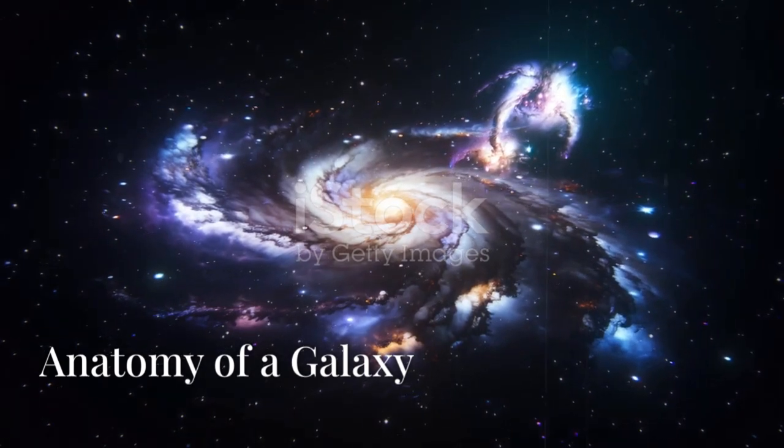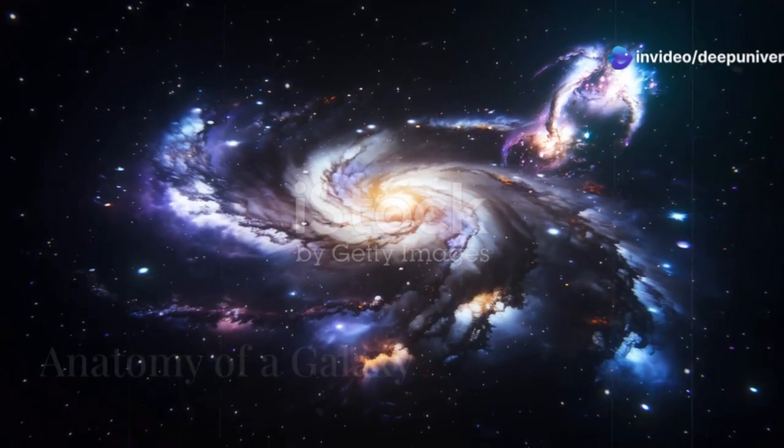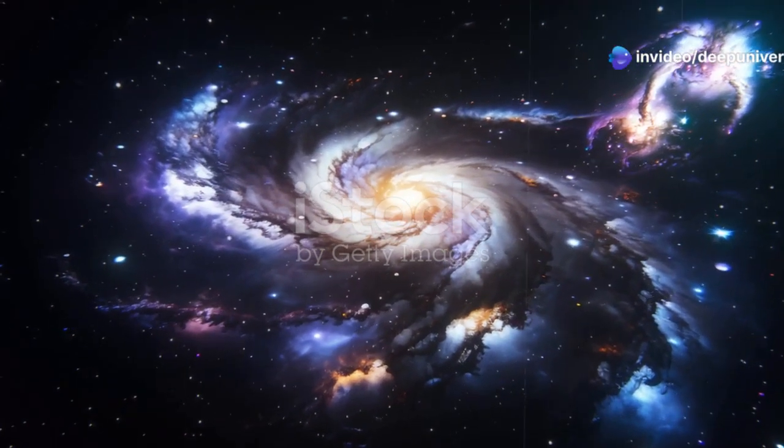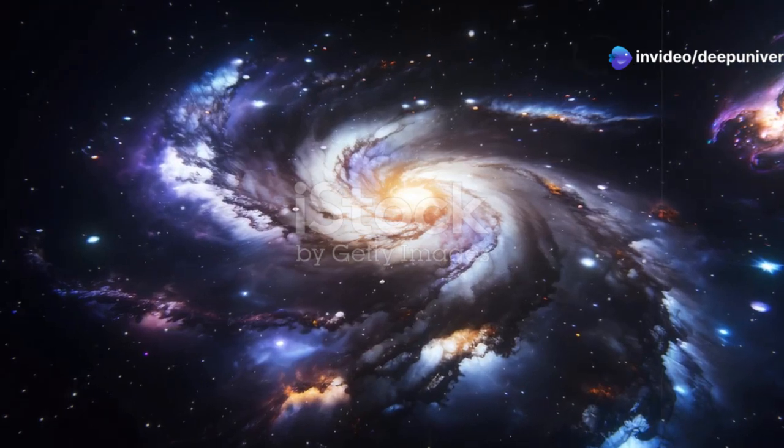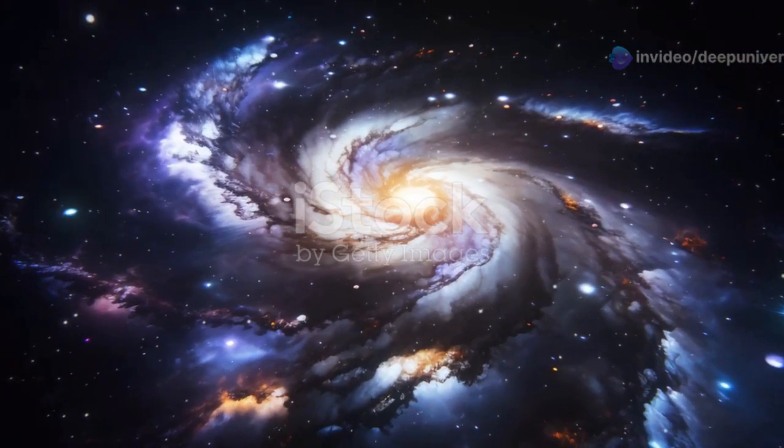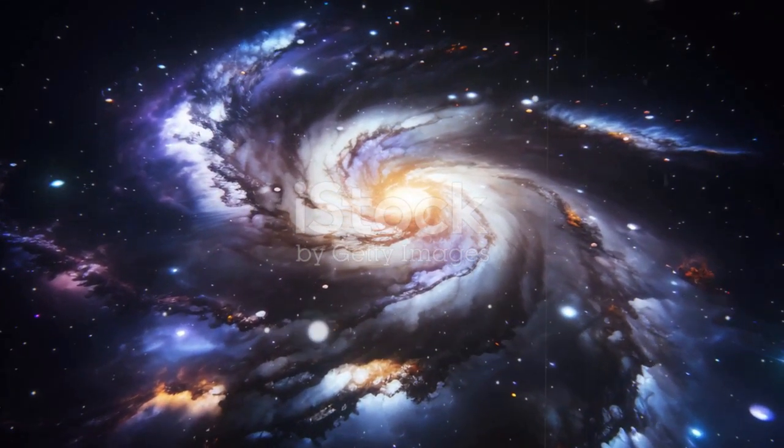Anatomy of a Galaxy. Galaxies are vast, complex systems composed of stars, gas, dust, and dark matter, all bound together by gravity. Understanding the anatomy of a galaxy helps us comprehend the universe's structure and evolution.